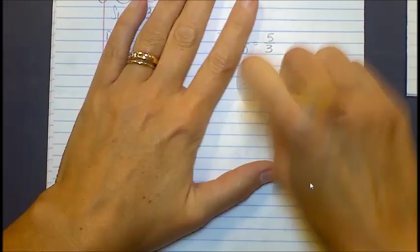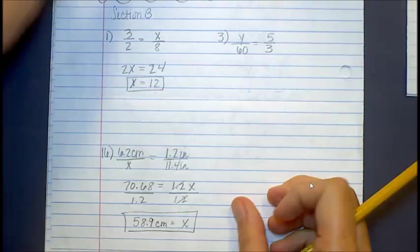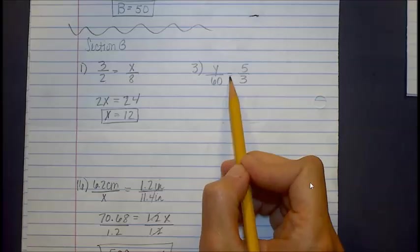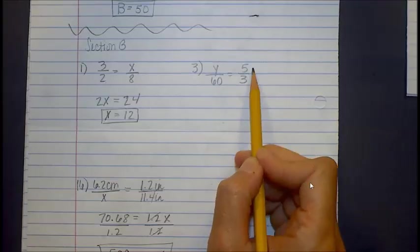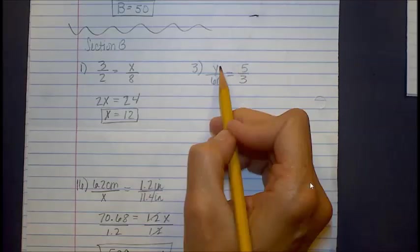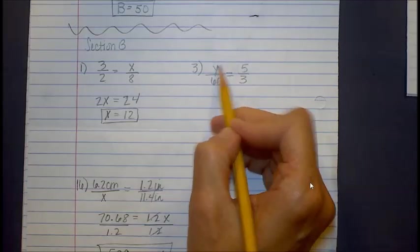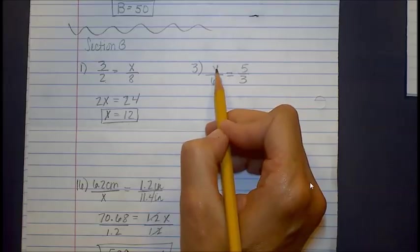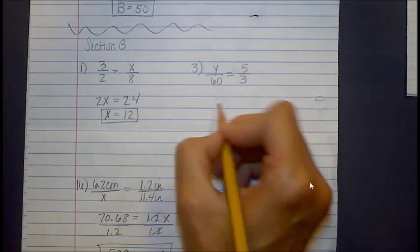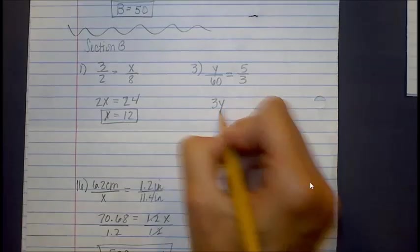Let's look at the second one. Number three? Yeah. Okay. So you'll notice that we have y over 60 is equal to 5 over 3. Okay. So we're going to do the cross multiplying. We always start with the top. I'm going to start with the y, and then we're going to multiply it by the bottom on the other side.